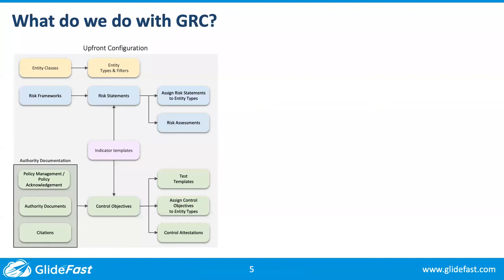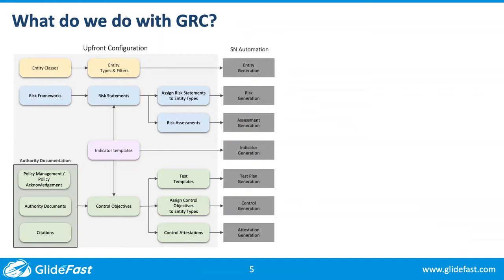For example, we should be configuring applications to require passwords that are eight characters long at minimum, 12 at maximum, with an uppercase, a lowercase, a special character, and a number. That's a template — it's something we should be doing. Once we've got all of that documented and put into the system, we let ServiceNow do what it does best: automation.